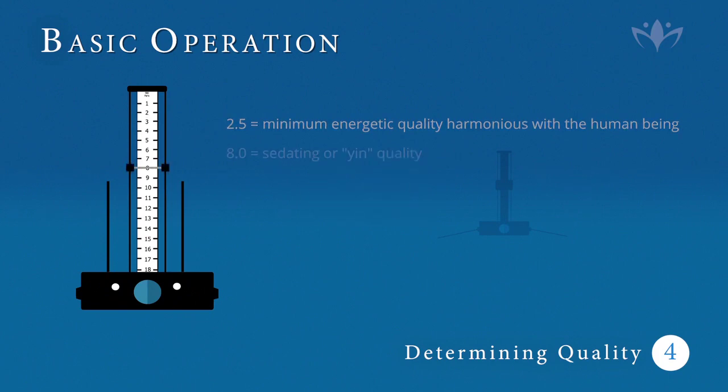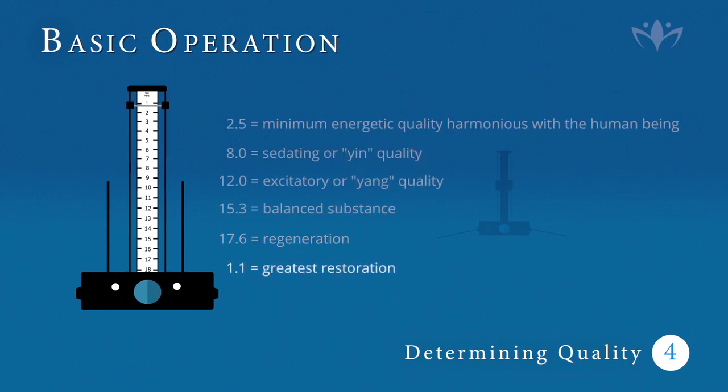8 correlates to the presence of a sedating or yin quality, while 12 relates to an excitatory or yang quality. 15.3 denotes a balanced substance containing both yin and yang qualities, the synergistic effect resulting in a product that is radiating or very positive. 17.6 is a synergy of all previous qualities plus one that has the capacity for regeneration. 1.1 is the highest possible quality. Any product that responds to the Lecher on this setting has the greatest potential for restoration.